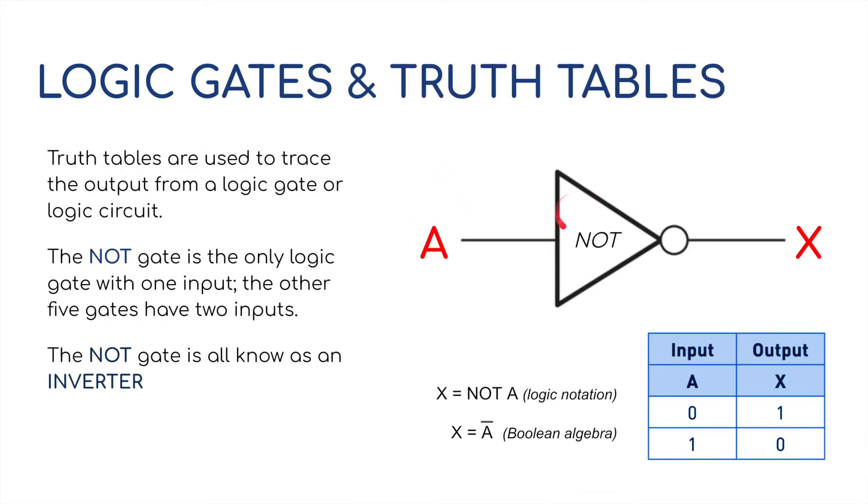Here we have the NOT gate, which is also known as the inverter gate. As you can see, we've got one input going into it and then an output going out of it. All the NOT gates, for example, the NOT, the NOR, and the NAND, all have one of these little circles in front of the actual gate. And here is an example of a truth table. Truth tables are used to trace out the output from the logic gate or the logic circuit.